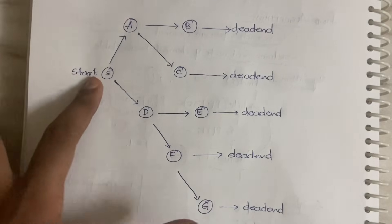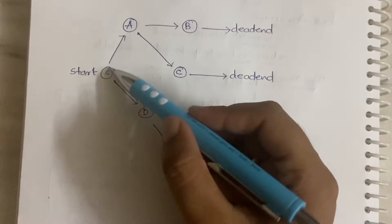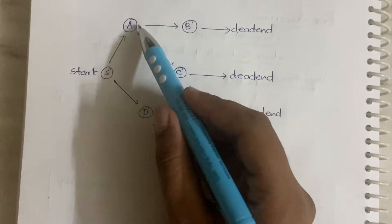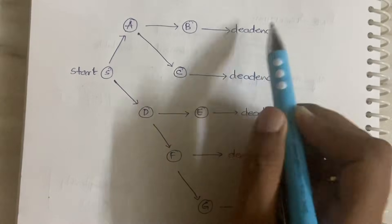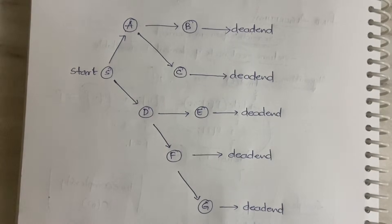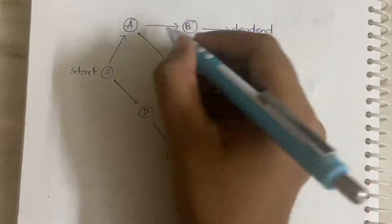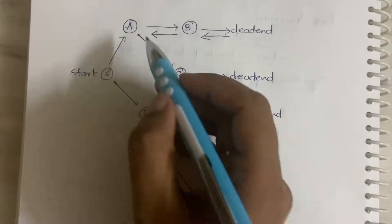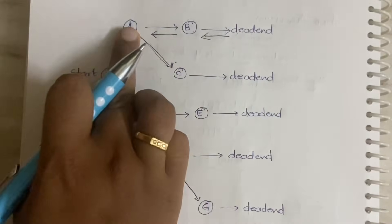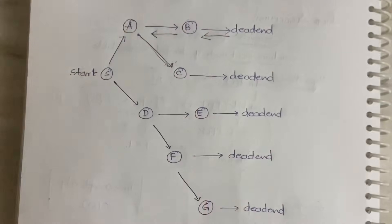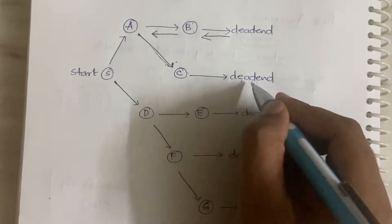We are starting from S and we are supposed to go till G, so S to G is our path. First you go from S to A, then A to B. From B you hit a dead end — you are not reaching your destination. So you come back. From B there are no other sub-nodes, so you go back to A. From A you have C, so you go to C. From C you hit a dead end again.